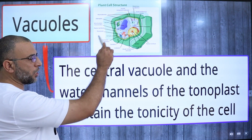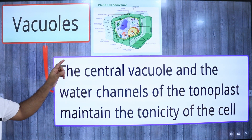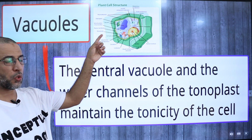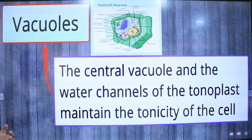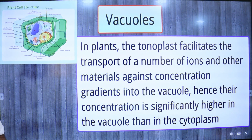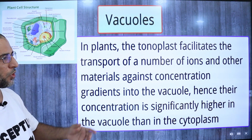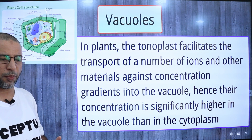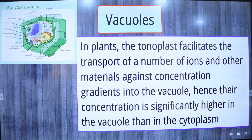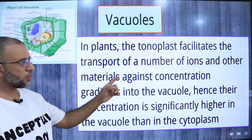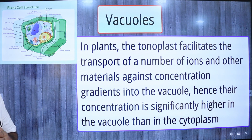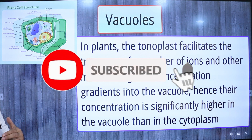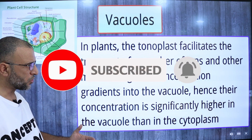Plant cells have a central vacuole, and the water channels of the tonoplast maintain the tonicity of the cell. Tonicity is a measure of the relative concentration of solute particles on either side of a semi-permeable membrane. In plant cells, the tonoplast facilitates the transport of a number of ions and materials against the concentration gradient into the vacuole — meaning ions and molecules move from a region of lower concentration towards a region of higher concentration.